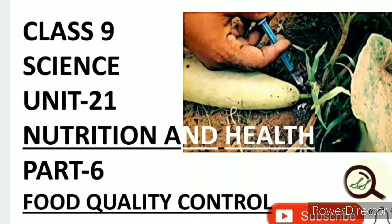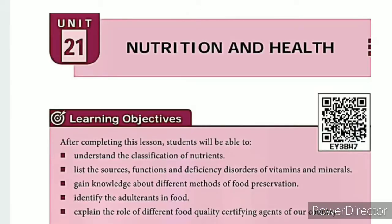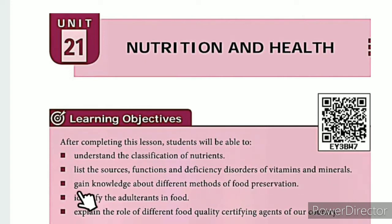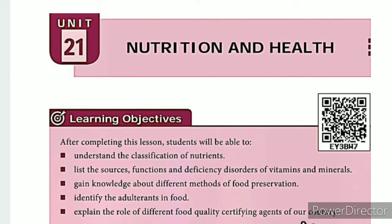Greetings from SS Class 9 Science Unit 21: Nutrition and Health, Part 6 - Food Quality Control. The lesson level learning objectives are: understand the classification of nutrients, list the sources, functions, and deficiency disorders of vitamins and minerals, gain knowledge about different methods of food preservation, identify adult trends in food, and explain the role of different food quality certifying agents of our country.